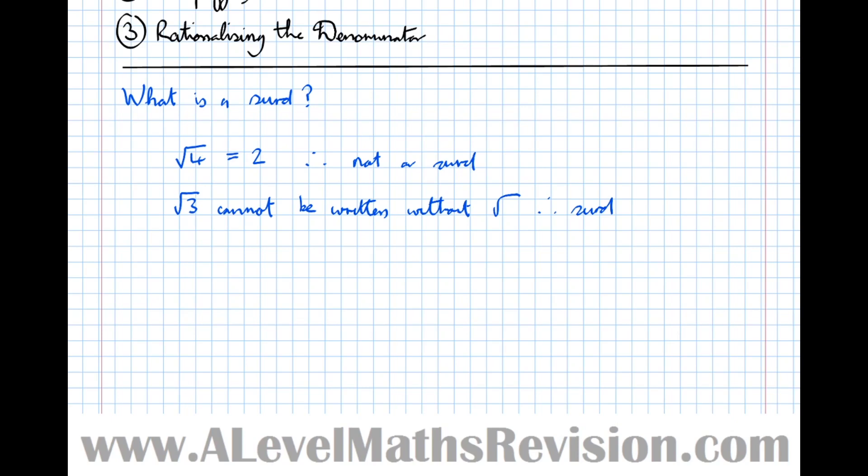However, root 3 can't be written without the square root sign. Therefore, it is a surd. Just a quick recap of that. Root 4 can be written without a root sign, therefore it's not a surd. Root 3 can't be written without a root sign, therefore it is a surd. And the same actually goes for any root of a prime number. So the root of any prime number is always a surd. We most commonly see square roots as being what makes a surd, but actually can be cube roots as well. So for example, the cube root of 2 is also a surd.